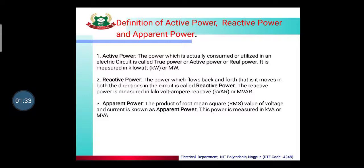For AC, power is the product of voltage, current, and cosine phi — that is the power factor. There are basically three types of power: active power, reactive power, and apparent power.